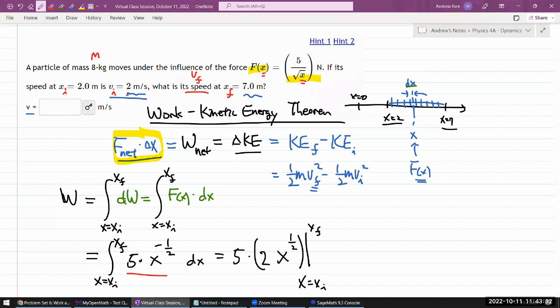Let me just finish writing this out. So, ten times square root of x final minus square root of x initial. That's going to give me the total amount of work done.